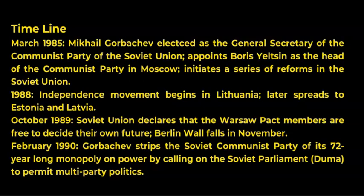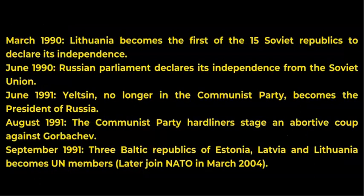February 1990 — Gorbachev strips the Soviet Communist Party of its 72-year-long monopoly on power by calling on the Soviet Parliament (Duma) to permit multi-party politics. March 1990 — Lithuania becomes the first of the 15 Soviet Republics to declare its independence. June 1990 — Russian Parliament declares its independence from the Soviet Union. June 1991 — Yeltsin, no longer in the Communist Party, becomes the President of Russia.